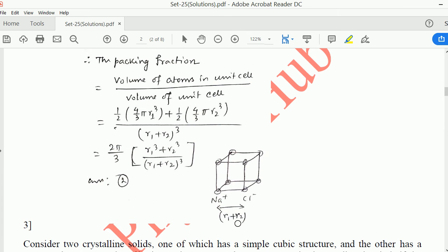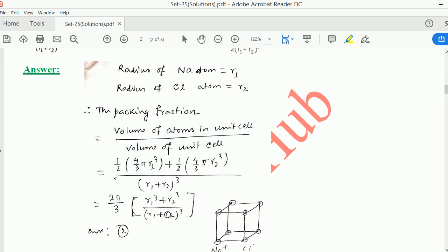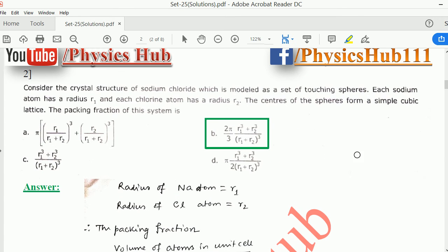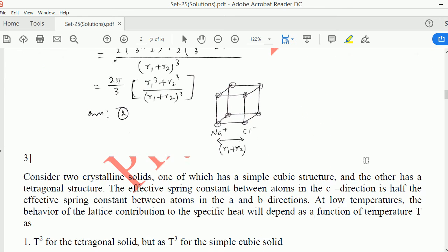So half times four-thirds pi r1 cubed plus half times four-thirds pi r2 cubed divided by volume of unit cell. It means (r1 plus r2) cubed. This equals 2 pi over 3 times (r1 cubed plus r2 cubed) divided by (r1 plus r2) cubed. And it is matching with option 2. So option 2 is the correct option.